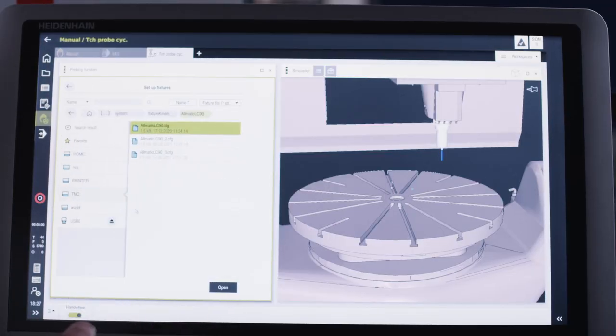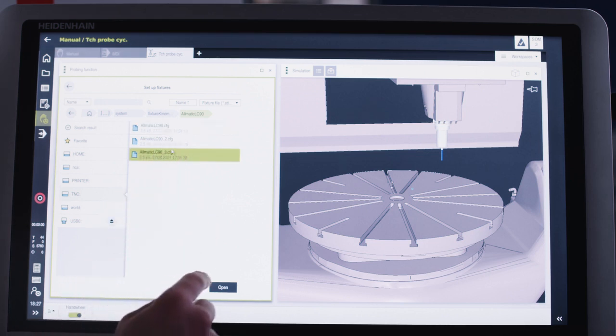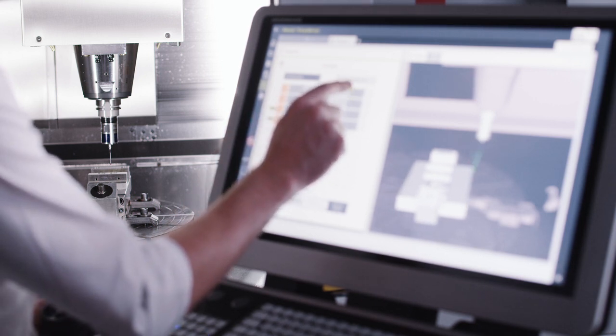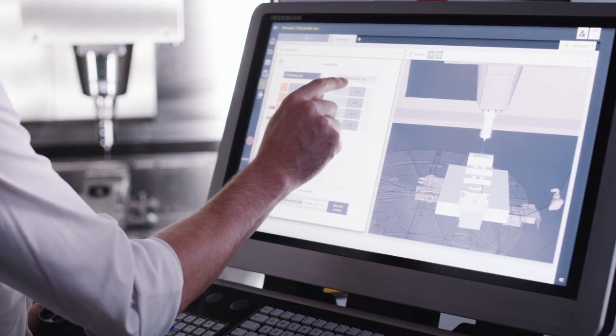So now I select setup fixtures and choose the right 3D model for the fixture. Next I shift it to approximately the same position as the real fixture in the work envelope.